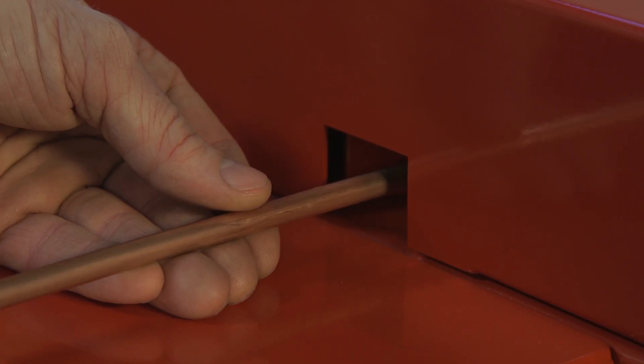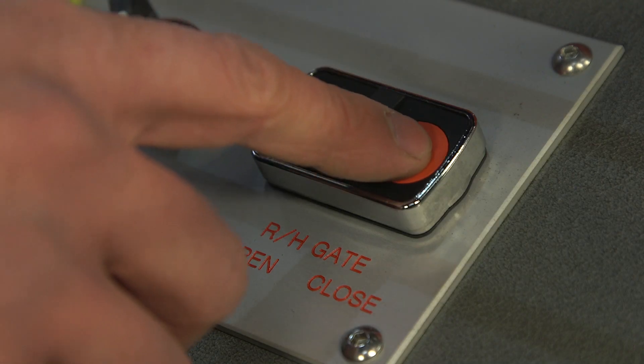The rod is fed into either side of the machine and the gates activated to firmly clamp the material.